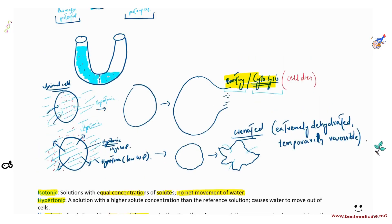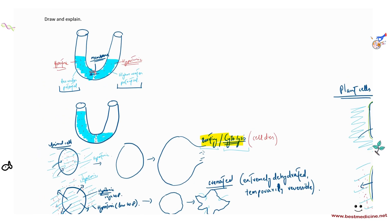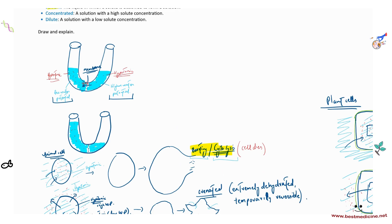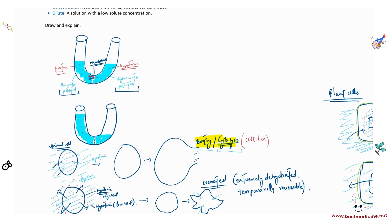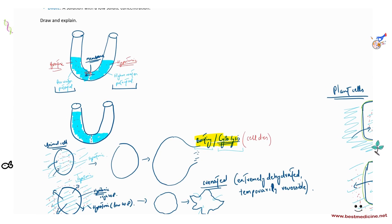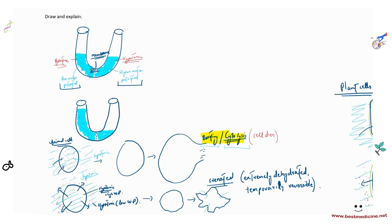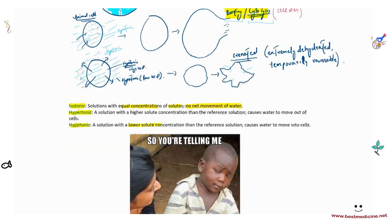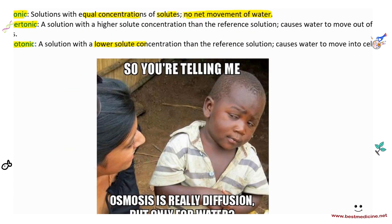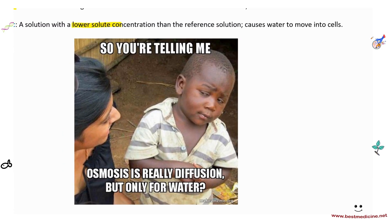Osmosis is a lot like diffusion, except it is for water only and occurs across a partially permeable membrane.